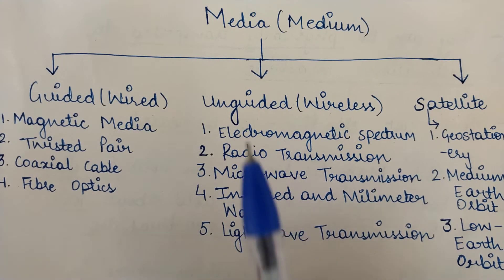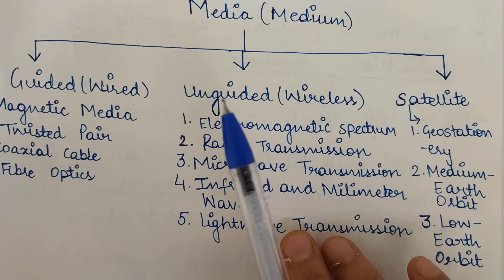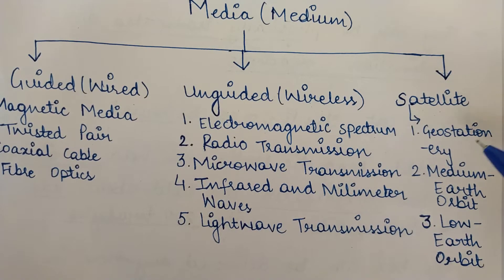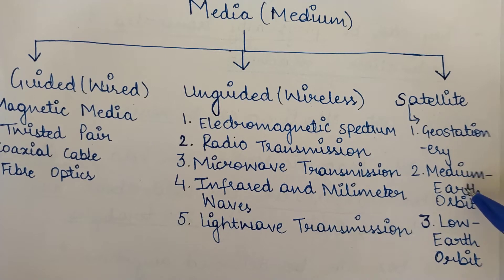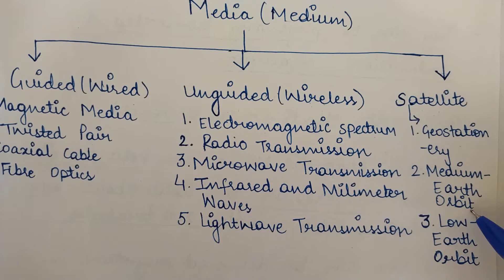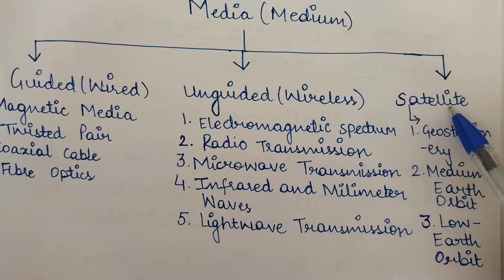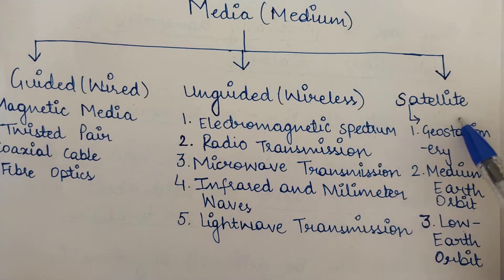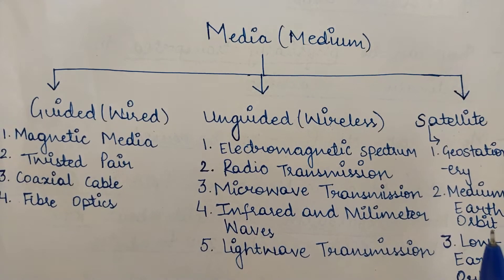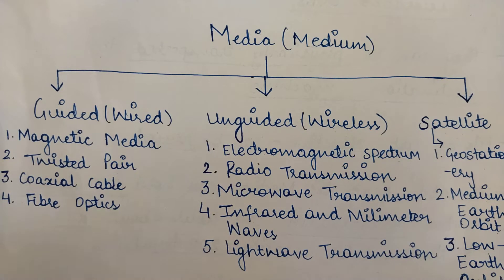The types of wireless transmission media also include infrared, millimeter waves, and light wave transmission — five different types in total. For satellite as a transmission medium, there are three types: geostationary satellites, medium earth orbit satellites, and low earth orbit satellites. All of these we will study in detail, but today's focus is on guided or wired media, specifically magnetic media.